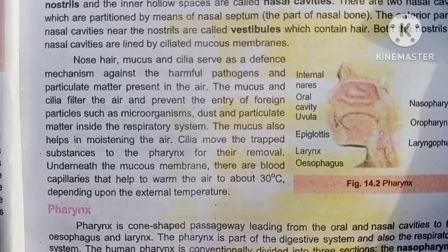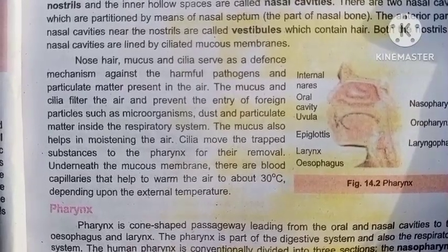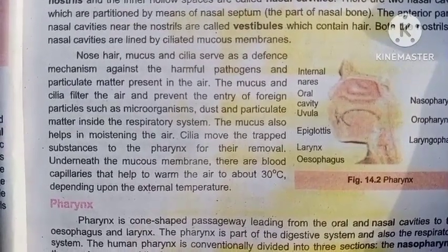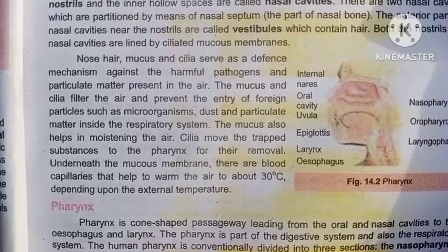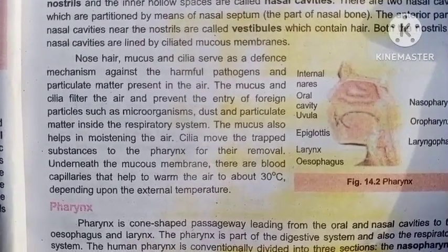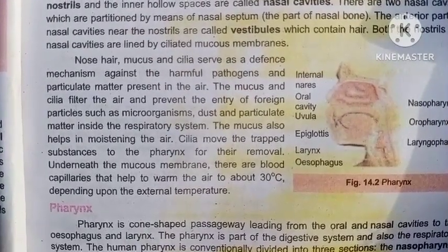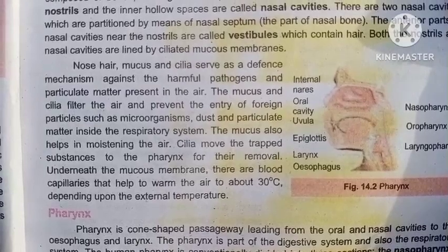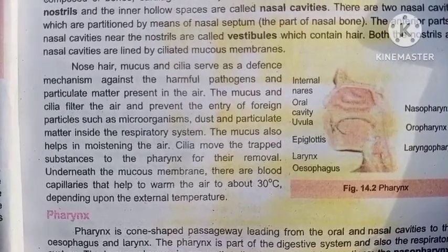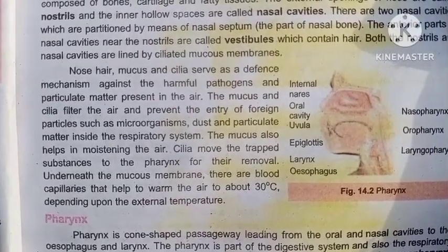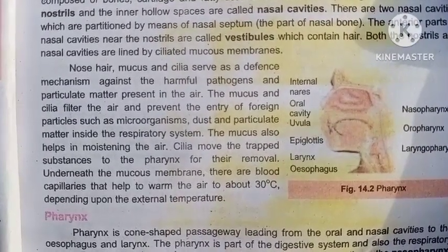The mucous also helps in moistening the air. Cilia move the trapped substances to the pharynx for their removal. Underneath the mucous membrane there are blood capillaries that help to warm the air to about 30 degrees centigrade, depending upon the external temperature.